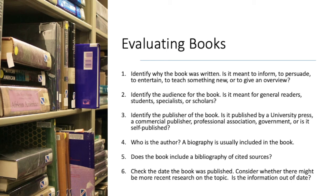You'll also want to look for the publisher of the book. This information should be inside the front cover of a printed book, or in an online book it should be included on the page where you access the ebook. You might find it's published by a university press, a commercial publisher, a professional association, a government, or it might even be self-published. Generally, books by an academic press will be more scholarly in nature, while commercial publications have a range of purposes including entertainment, instruction, or study. Self-published works can be interesting — some might be less reliable because they have not gone through an editing process, but if you're reading a self-published autobiography, you might consider it reliable as a reflection of that person's own life and perspectives.